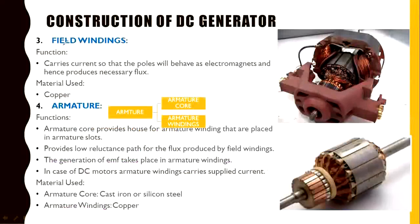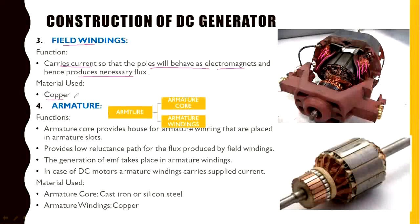The field windings are placed on the magnetic poles. They carry current so that the poles behave as electromagnets and hence produce the necessary amount of flux. When the field windings carry current, the poles — which are made of cast iron or silicon steel — start behaving as electromagnets and generate the necessary magnetic field. The material used for the field windings is copper.